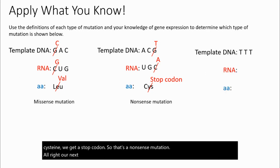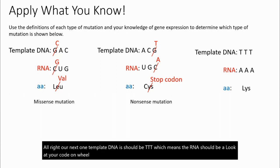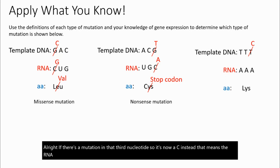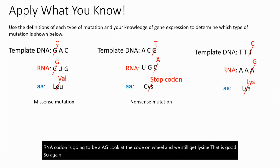Another example: template DNA is TTT, so the RNA should be AAA, which codes for the amino acid lysine. If there's a mutation in the third nucleotide changing it to C, the RNA codon becomes AAG. Looking at the codon wheel, AAG still gives us lysine. No harm, no foul — this is a silent mutation.